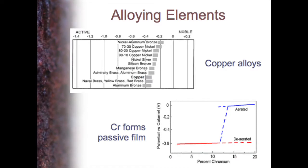Some of the factors that influence the galvanic potential: obviously the alloying element. Going back to the INCO series — copper, if we join a more active, more anodic metal to it such as zinc, we form the brasses, which become slightly more negative. And if you join more noble metals such as nickel, then it becomes more positive.